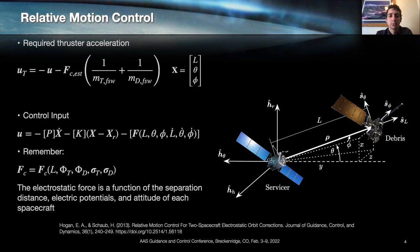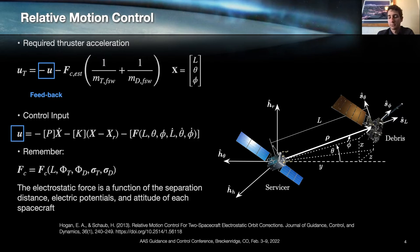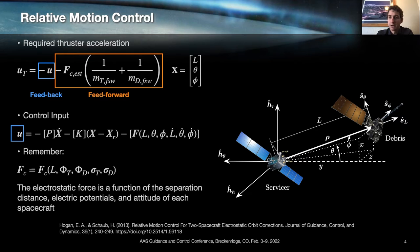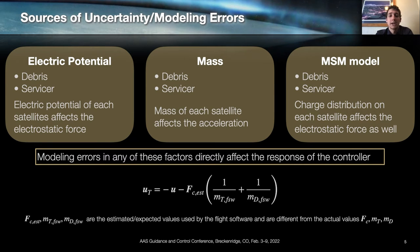For the relative motion control we use a spherical coordinate frame with the separation distance L and in-plane and out-of-plane rotation angles theta and phi. The required thruster acceleration for the controller consists of a feedback term U that feeds back on the relative position and velocity between the two spacecraft, and a feedforward term that feeds forward on the electrostatic force acceleration between the two spacecraft. With this feedback-feedforward structure we get some sensitivity to sources of uncertainty. For example, the feedforward term includes the electric force, so if we estimate the electric potential of either the debris or the servicer incorrectly, that will affect the relative motion control and the control response.